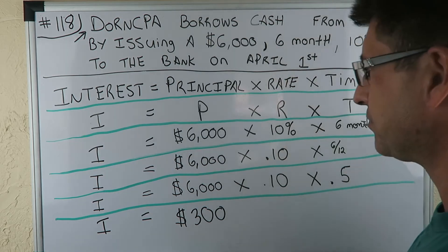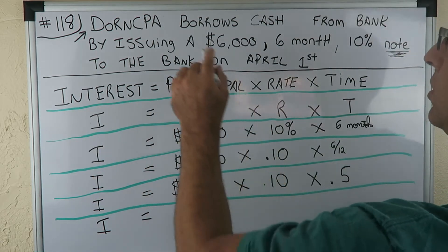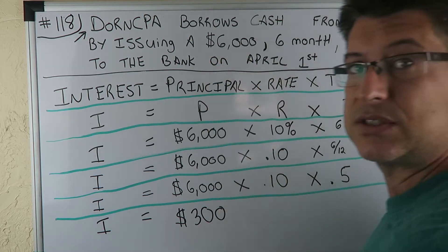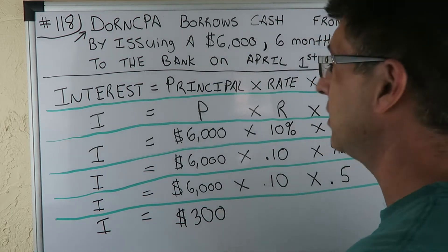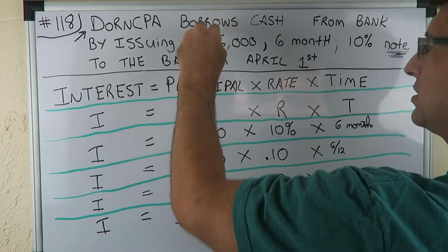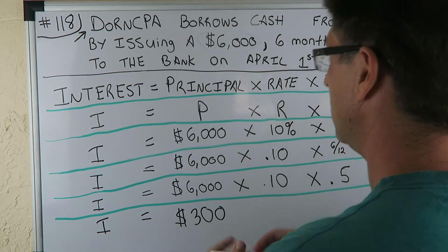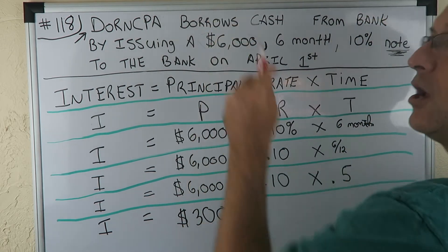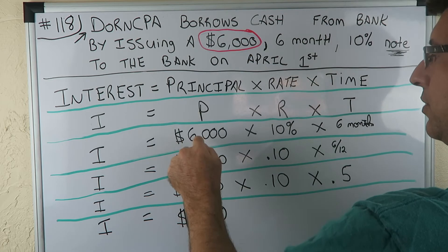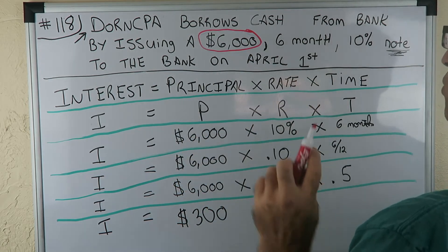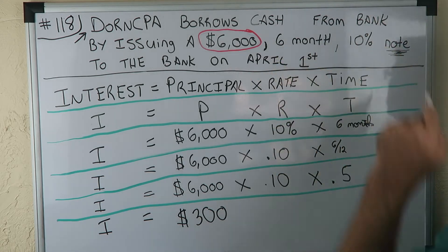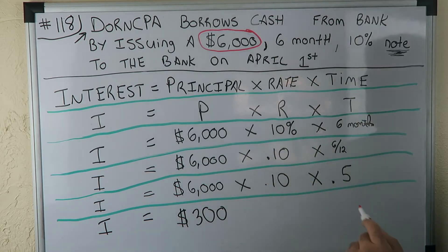Interest equals — what was our principal? Dorn CPA borrows cash from the bank by issuing a $6,000 note. That's our principal — $6,000, that's how much we borrowed from the bank. $6,000 is our principal. Principal $6,000 times Rate. What's our rate? Our rate is 10% for six months. 10% is the rate of interest, so 10% right there for the rate.